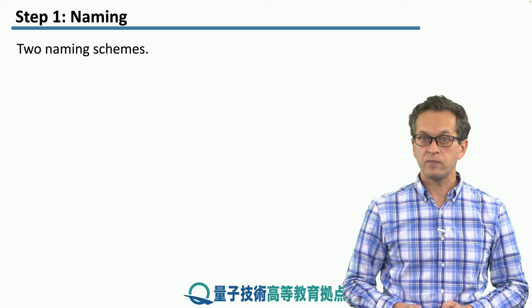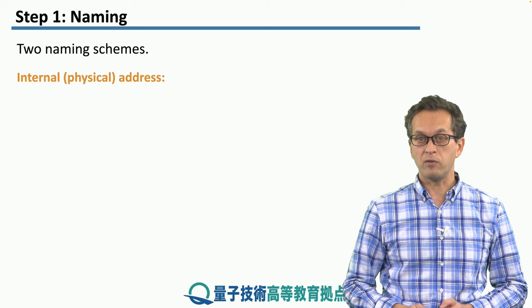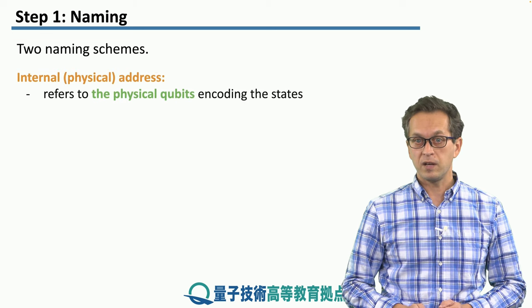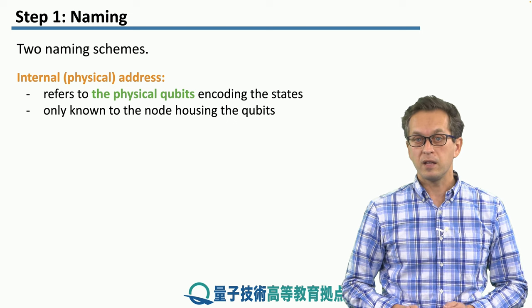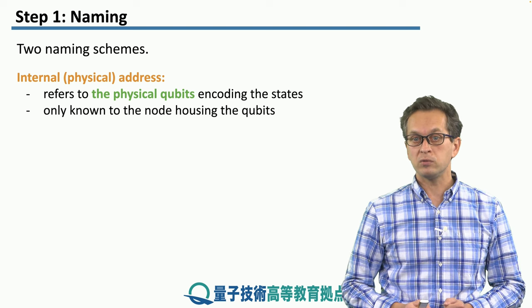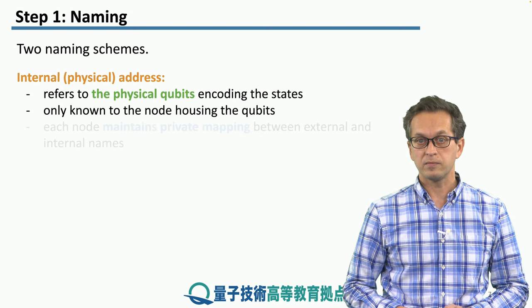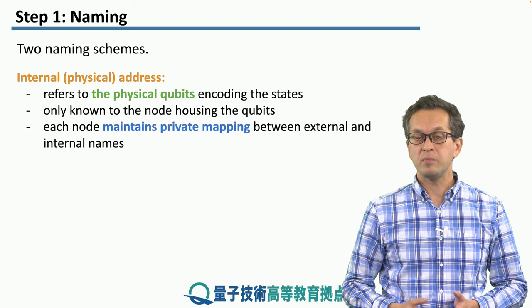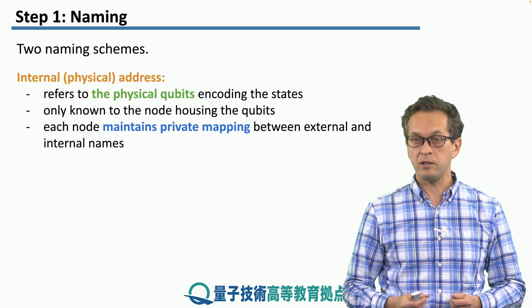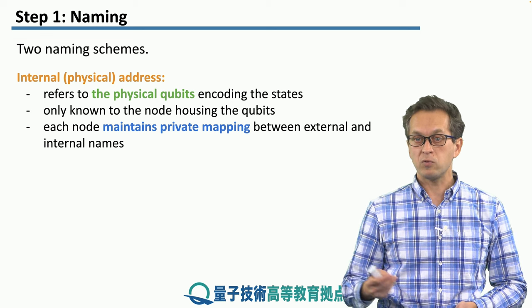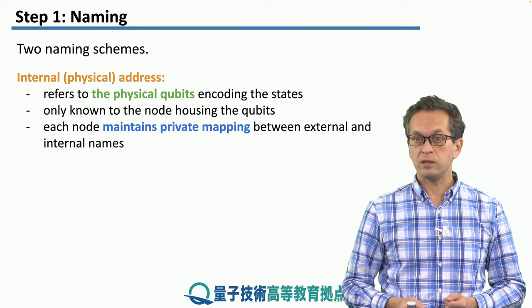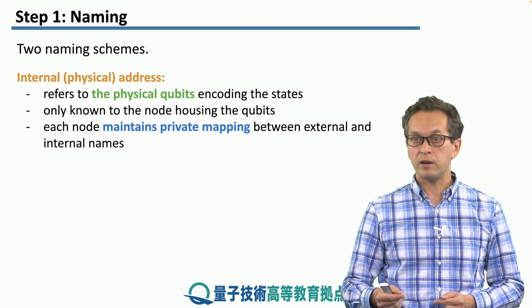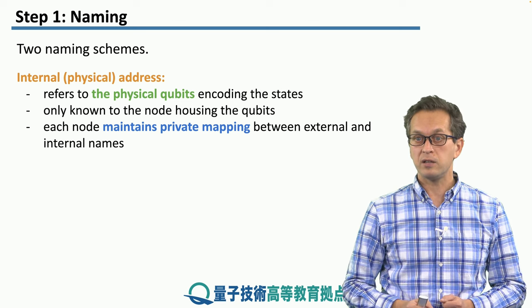And the second naming scheme is an internal or physical address. This refers to the physical qubits encoding the states. This naming scheme is only known to the node housing the qubits. And each node maintains a private mapping between the external and internal names. So when some message comes from a distant node saying 'please apply the following operation to your state,' the node can translate where that physical qubit corresponding to the state is stored.